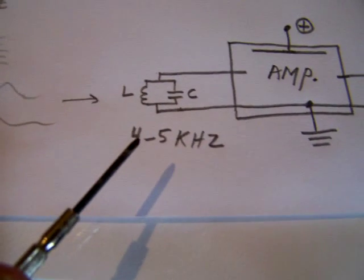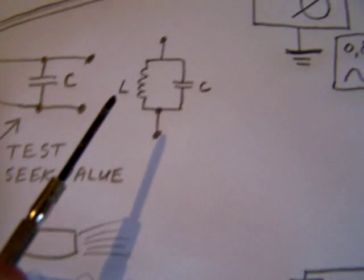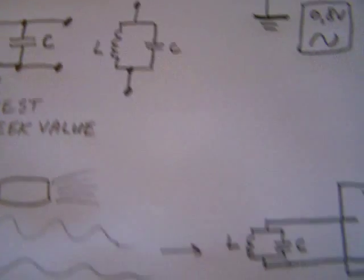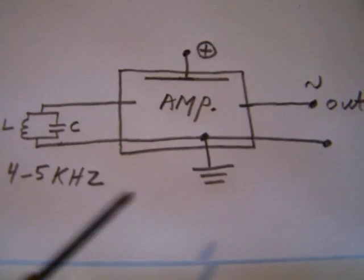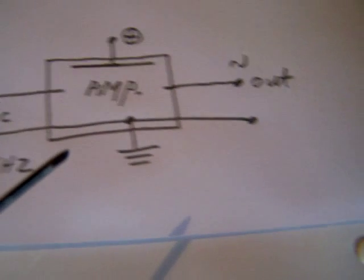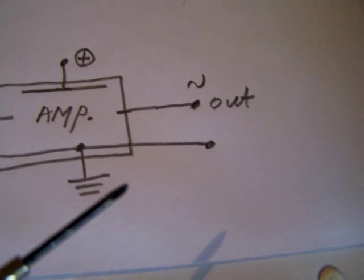You can see it here. This is the coil and this is the capacitor. After that it's fed into an amplifier. It amplifies the radio signal on the frequency and you can then put it on the scope.